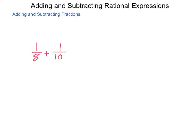The process we go through is we take our denominators as they're given — so 8 and 10 — and we have to find what the lowest common multiple is of those two numbers. Taking 8, it is equal to 2 cubed. Then, taking 10, I get 2 times 5.